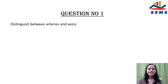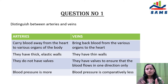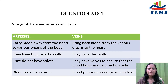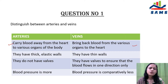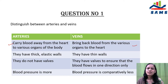Distinguish between arteries and veins. What are the points of differences between arteries and veins? The first difference is that arteries carry blood away from the heart to various organs of the body, whereas veins bring back blood from the various organs to the heart. Please do not write that arteries carry oxygenated blood and veins carry deoxygenated blood, because there are exceptions to this.